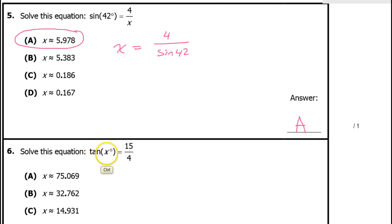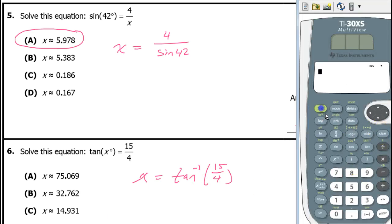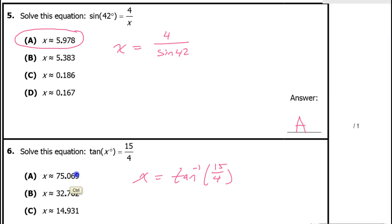When the variable is inside the trig function, that's when you use the inverse trig function. So x equals the inverse tangent of 15 over 4. Putting that in the calculator gives 75.069, so the answer is A again.